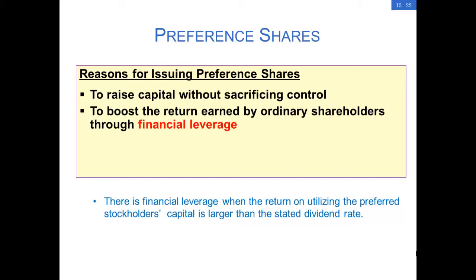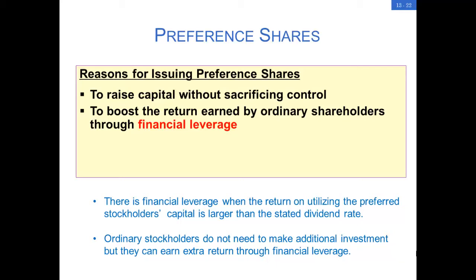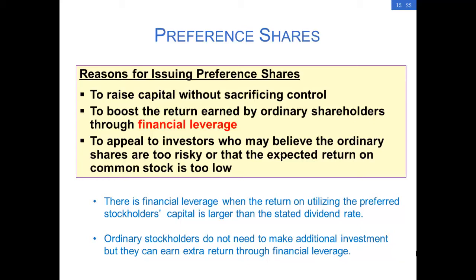So through financial leverage, the ordinary shareholders do not need to make any additional investment but they can earn an extra return. Issuing preference shares is also a way to raise ownership capital when the ordinary share is perceived as too risky or has a lower than expected return, making it not quite attractive. That is why corporations attract capital by issuing preference shares.